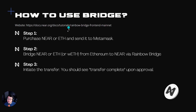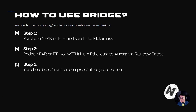The first step is to purchase NEAR or Ethereum and send it to MetaMask. The second step is to go to the Rainbow Bridge and bridge your NEAR or ETH from Ethereum to Aurora, and you should see your transfer complete after you're done. So it's quite straightforward.